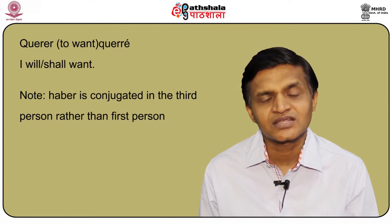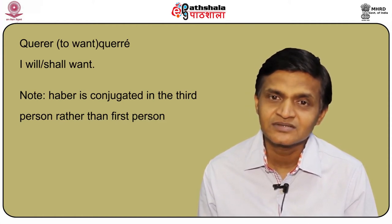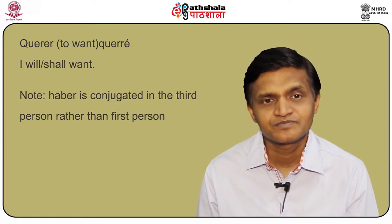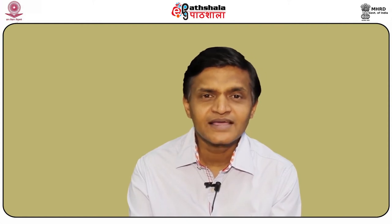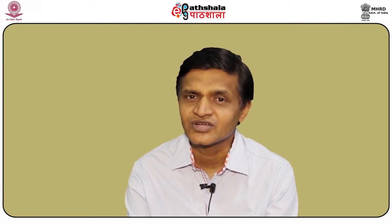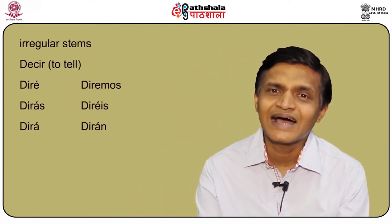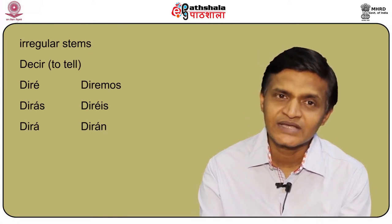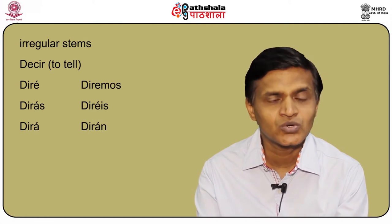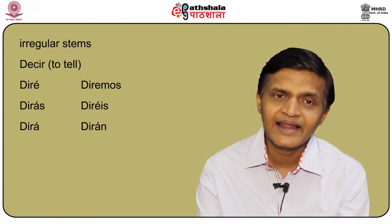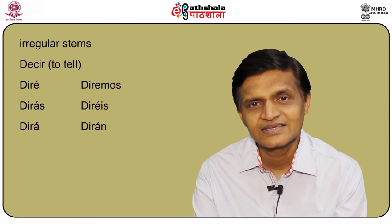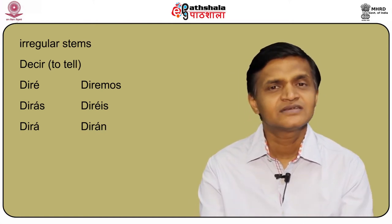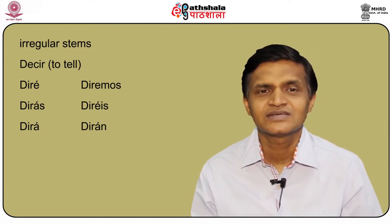Please note that the verb haber is conjugated only in the third person singular, not the first person. Moving on to the second set of irregular verbs: verbs like hacer and decir have irregular stems. Hacer becomes haré and decir becomes diré. The conjugation of decir: yo diré, tú dirás, él/ellas/usted dirá, nosotros diremos, vosotros diréis, and ellos/ellas/ustedes dirán.